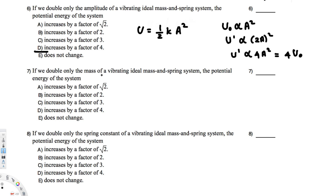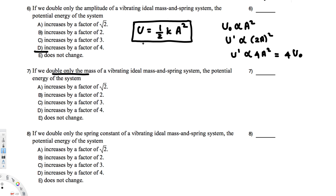The second question: if we double only the mass of a vibrating ideal mass-and-spring system, what will happen to the potential energy? Looking at the spring potential energy equation U = ½kA², there is no mass term. This is different from gravitational PE (mgh) — for a spring, the PE equation does not depend on mass.